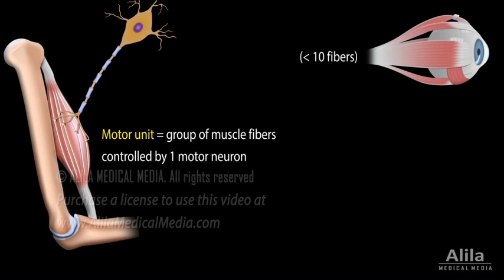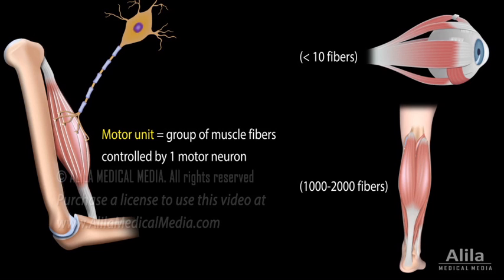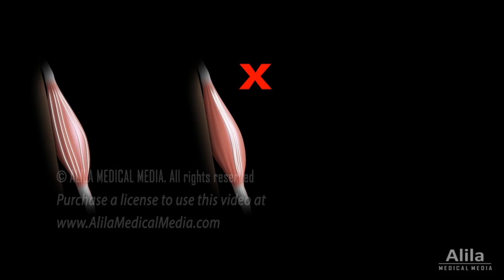Small motor units are found in muscles that require finer control, for example, muscles that are responsible for subtle movements of the eyes. Large motor units are found in larger muscles that require strength, such as muscles of the arms and legs. Muscle fibers of the same motor unit are usually not clustered together, but scattered throughout the muscle. This way, stimulation of a motor unit has a slight but uniform effect on the whole muscle, and not causing a small, localized twitch.